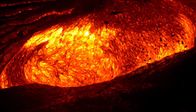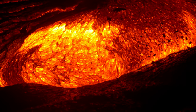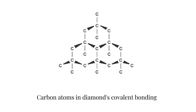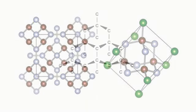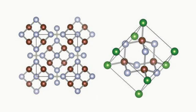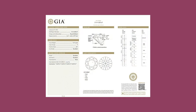Think of a diamond's type as being elemental. Every diamond originates from carbon. However, during its growth, atoms of other elements, primarily nitrogen, become incorporated into the carbon structure. These atoms can cluster together, influencing the color and visual characteristics of the diamond.